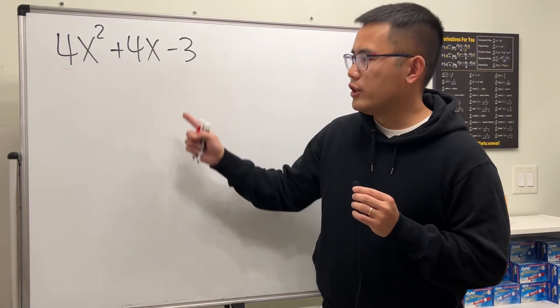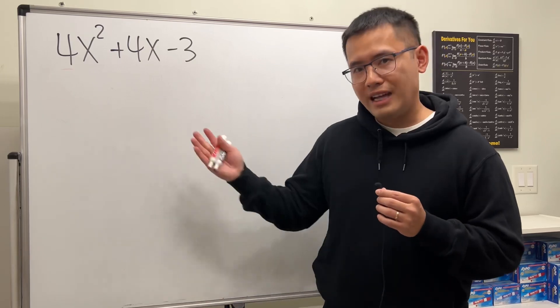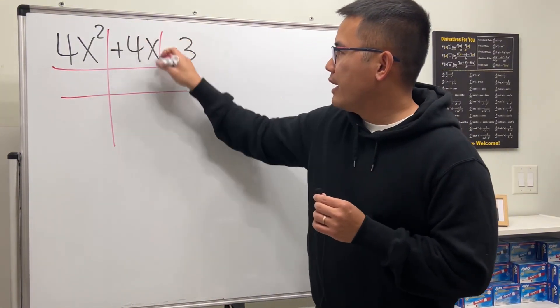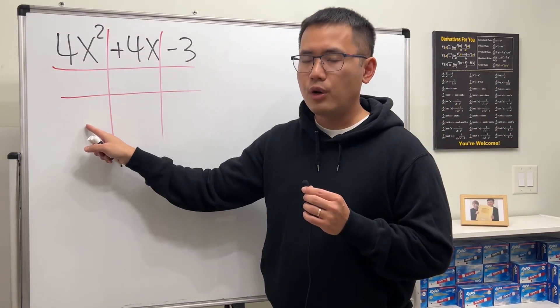So this is how you factor this trinomial with the tic-tac-toe method. First, we draw the tic-tac-toe boxes like so, and then we are going to figure out this and that.